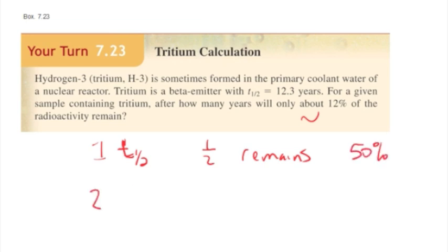And then after two half-lives, only one-fourth is going to remain, and that would be 25% remaining of the original sample. After three half-lives, that would mean one-eighth, because it's one-half of one-fourth would remain, and that's about 12%. So it's 12.5, but they said about, so about 12%.